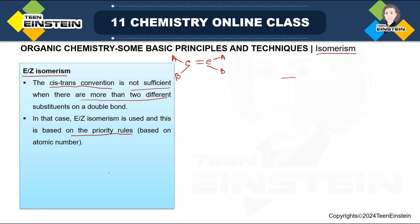E-Z isomerism is based on priority rules. In cis-trans it is easy — similar groups on the same side is cis. But when you have different groups, you must determine which has higher priority. For example, if B has more priority than A on the left, and C has more priority than A on the right, then if the higher priority groups are on the same side, you call it Z. If higher priority groups are on opposite sides, you call it E.